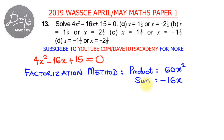We are looking for two particular terms such that if you multiply them you get 60x squared, and if you sum them you get minus 16x. As a rough sketch, let's take the product 60 and keep the x squared.